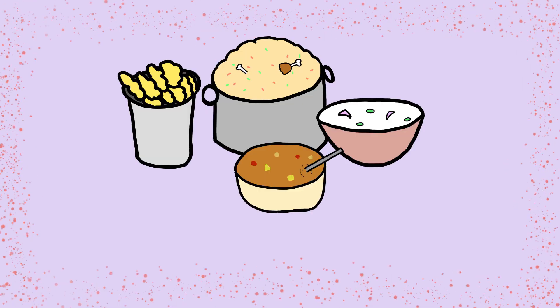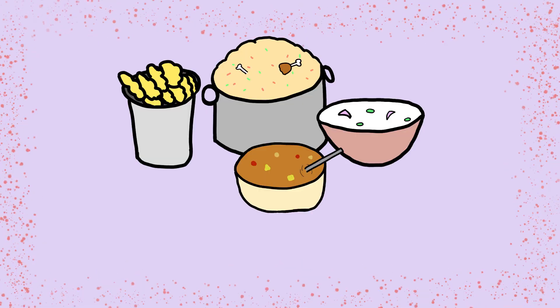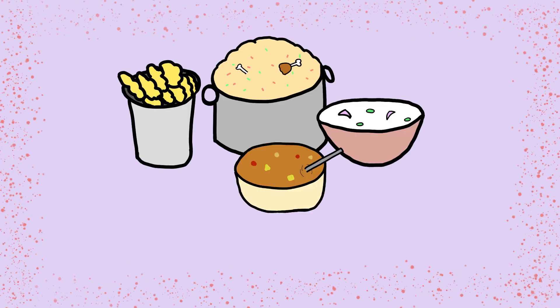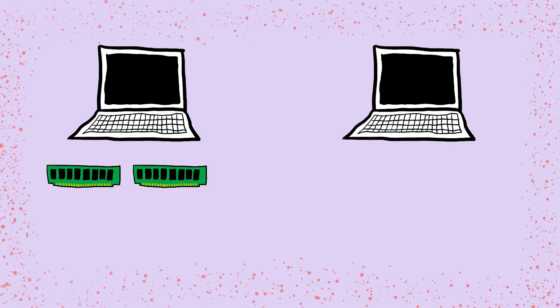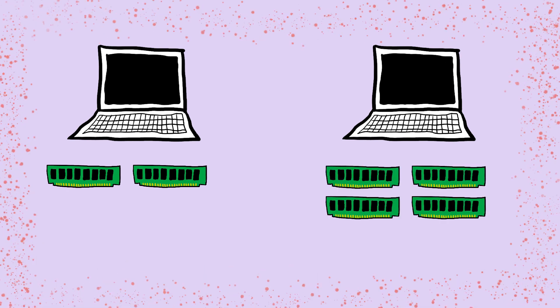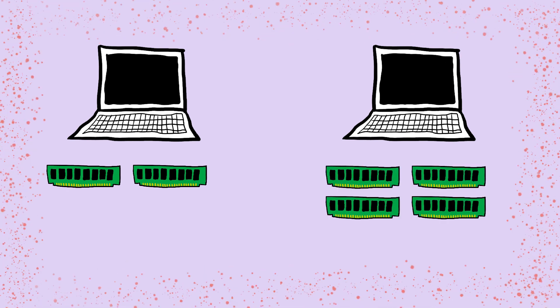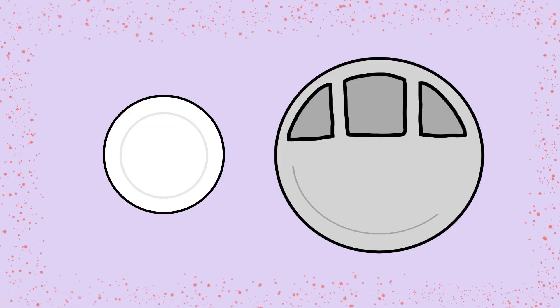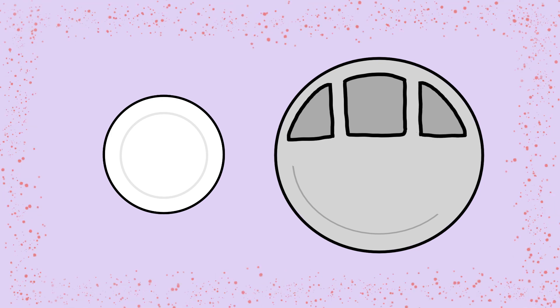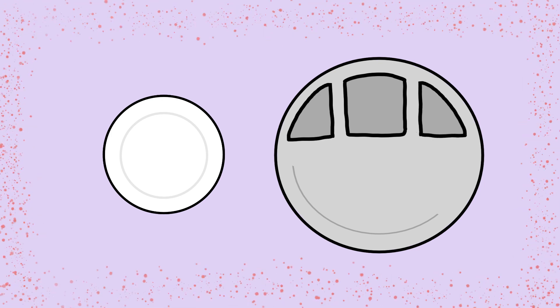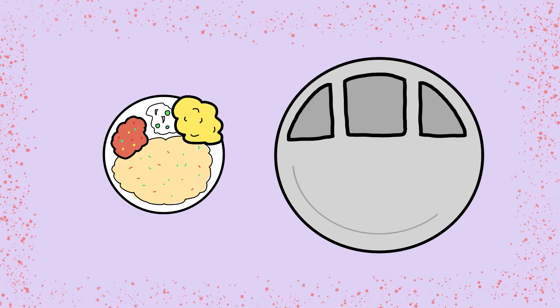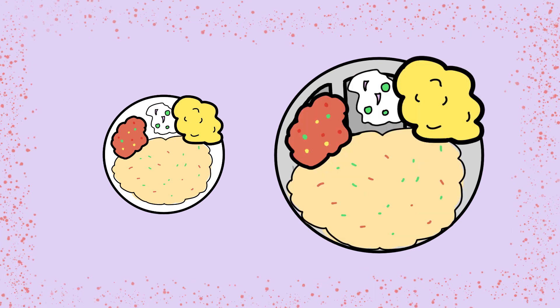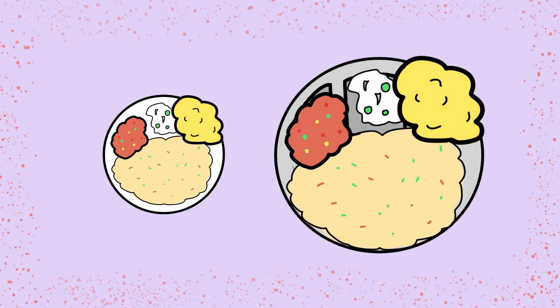Different programs might need to read data from different devices and use them all together as well. So what is the difference between a laptop with a smaller RAM size, say 4GB, and another laptop with say 32GB of RAM? You can see this as different people having plates of different sizes. If you are using a smaller plate, the amount of food that you can have in your plate at any certain instant of time will be smaller compared to what you can have in a larger plate.